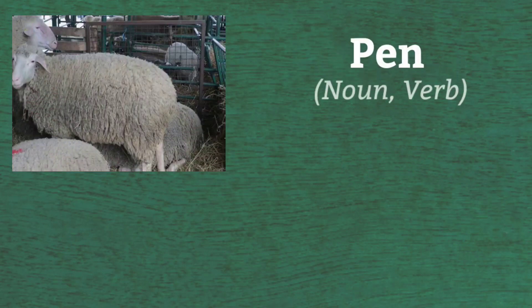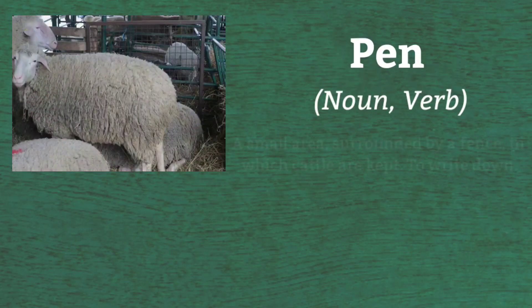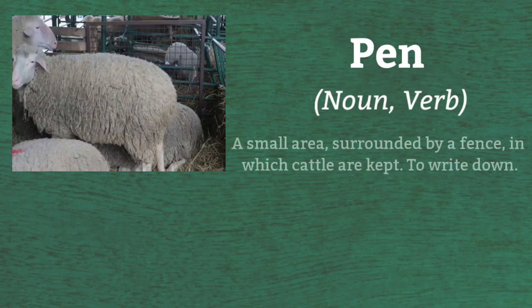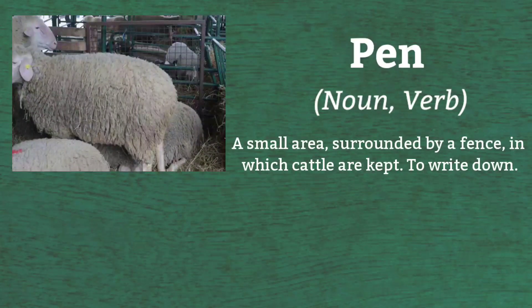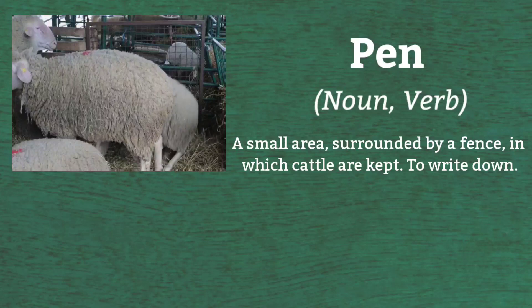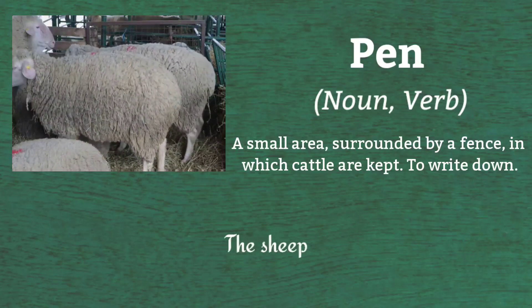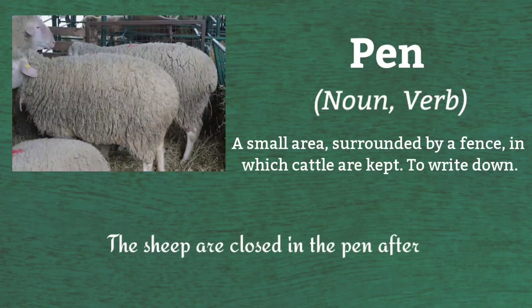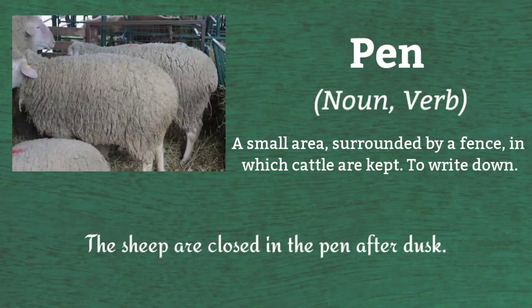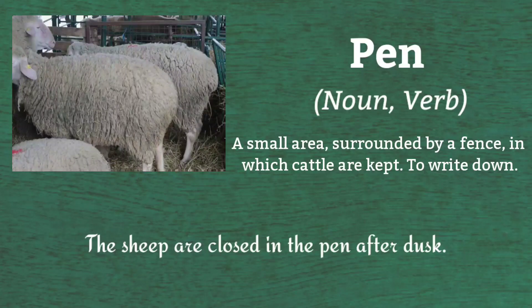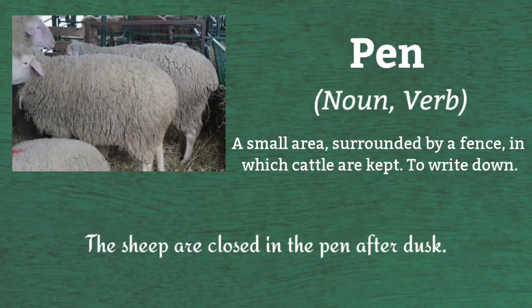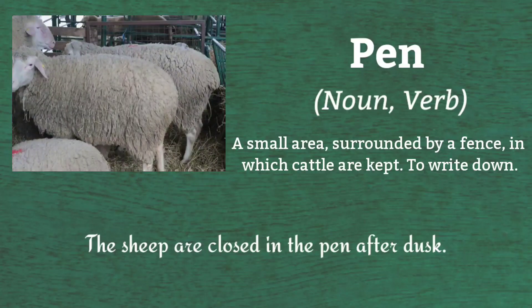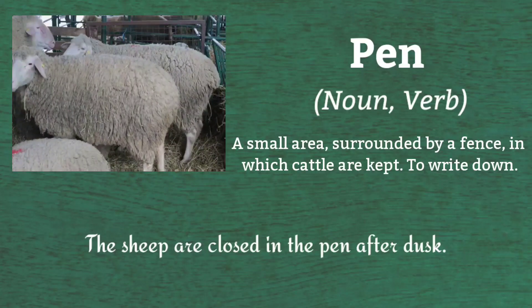Pen is a noun and verb. It means a small area surrounded by a fence in which cattle are kept, or to write something down. The sheep are closed in the pen after dusk.